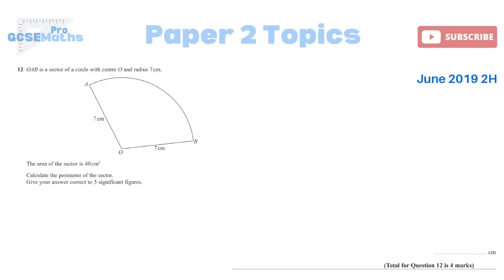Question 12, OAB is a sector of a circle with centre O and radius 7 centimetres. The area of the sector is 40 centimetres squared. Calculate the perimeter of the sector. For the perimeter we would need 7 plus 7 plus the arc length. Now for the arc length we would need our formula which is the whole circumference, so 2 pi r, times by the angle over 360. So now you can see what the problem is. We do know the radius but we don't know this angle.